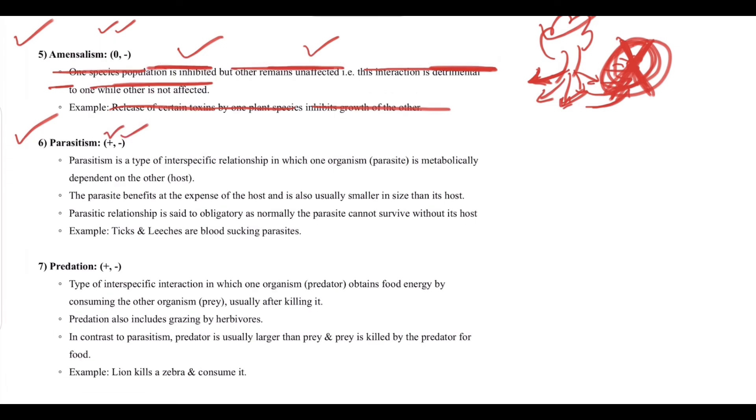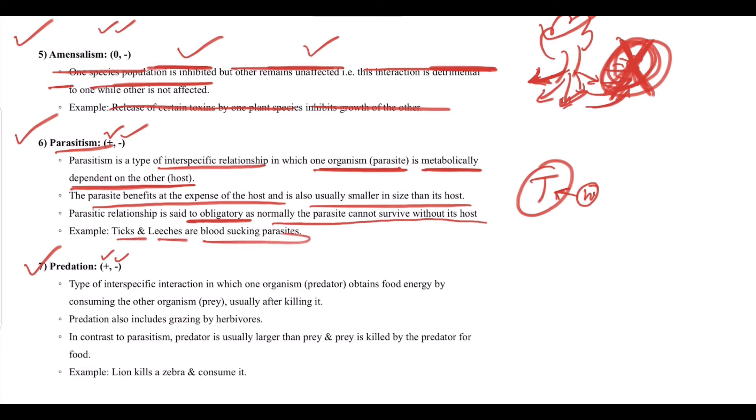Next we have parasitism, which is also positive negative. Parasitism is a type of interspecific relationship in which one organism, the parasite, is metabolically dependent on the other host. The parasite benefits at the expense of the host and is also usually smaller than the size of its host. Parasitic relationship is said to be obligatory as normally the parasite cannot survive without its host. For example, ticks and leeches are blood-sucking parasites.